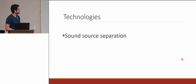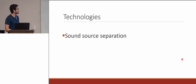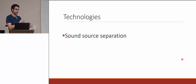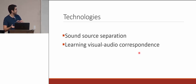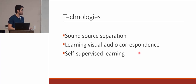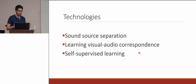Some of the key technologies they focused on: first, sound source separation, which is the classic cocktail party problem — you have a bunch of people talking at the same time but you want to hear just one voice. Visual audio correspondence maps that separated voice to the person talking in the image. They also use self-supervised learning — the only inputs were the images and audio from videos, with nothing labeled.